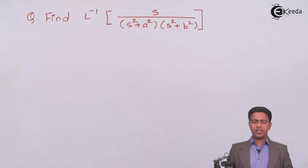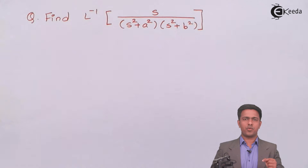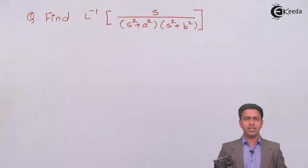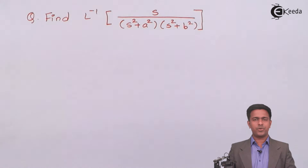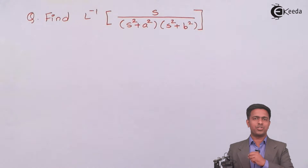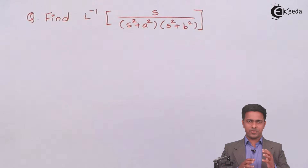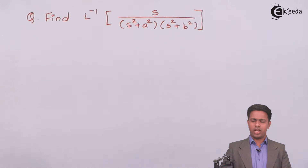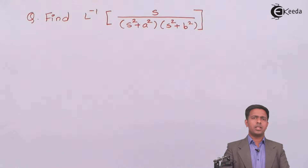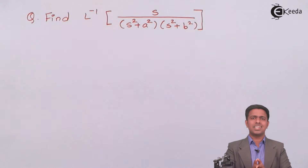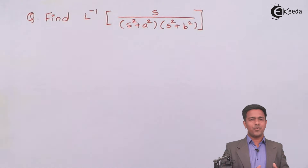Here we have to find out the inverse Laplace transform of S upon (S² + A²) into (S² + B²) by using convolution theorem. To find out the inverse Laplace transform of this function, there are many methods. I may use the partial fraction method, but since we are covering this problem under the convolution theorem, we are going to use that method.